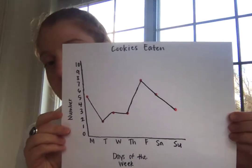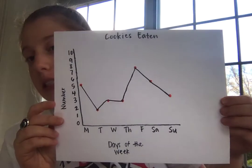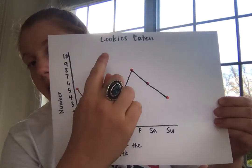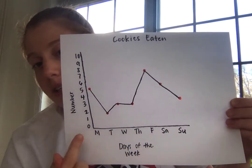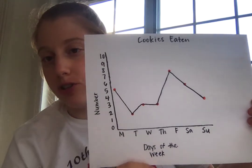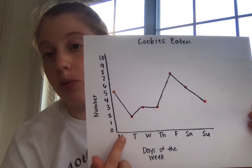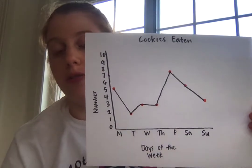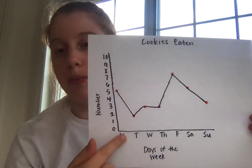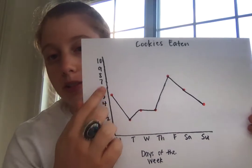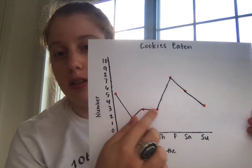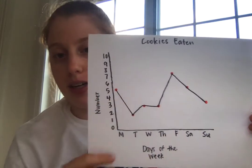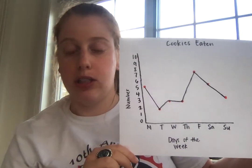So I made my data into a line graph and this is what mine looks like. Yours should look similar to this. You'll notice I have my title up at the top — cookies eaten. I have the days of the week down at the bottom. I used the abbreviations for them since I didn't have enough room to write out the whole word. I have my numbers going up on this side. Remember, in a line graph you have your points and you have the line that connects them all.